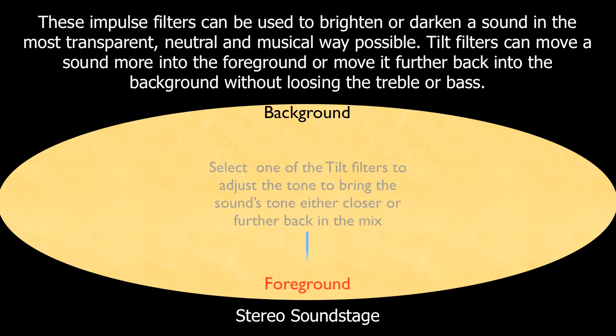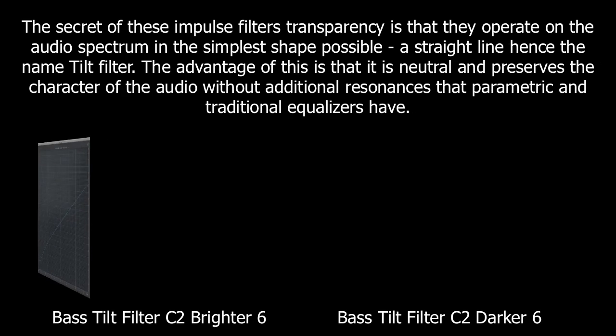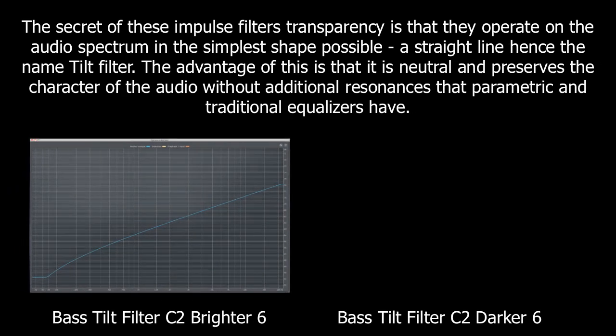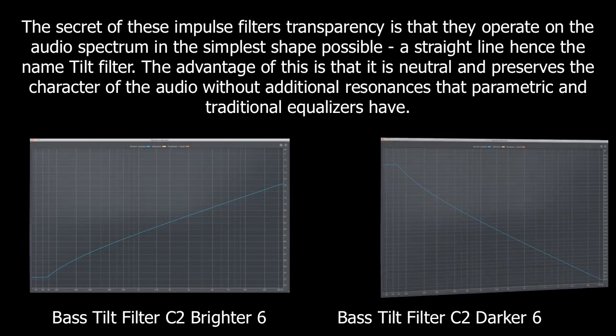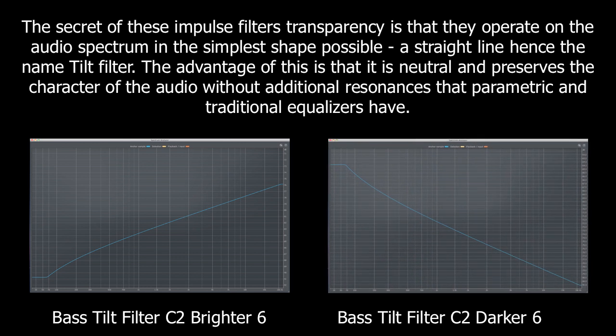Tilt filters can move a sound more into the foreground or move it further back into the background without losing the treble or bass. The secret of these impulse filters' transparency is that they operate on the audio spectrum in the simplest shape possible — a straight line, hence the name Tilt Filter. This means they are neutral and preserve the character of the audio without additional resonances that parametric and traditional equalizers have.